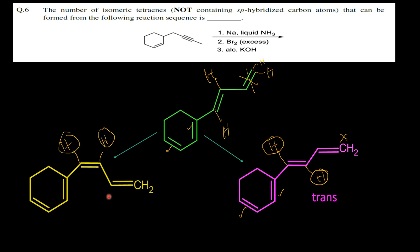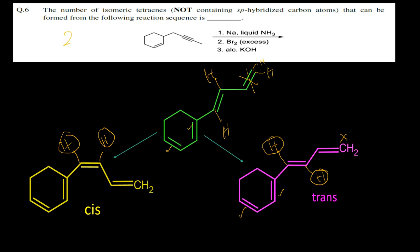So the answer to this question — the number of isomeric tetraenes that can be formed from the following reaction sequence — is two: one cis and one trans, due to the double bond system present. The number is two.